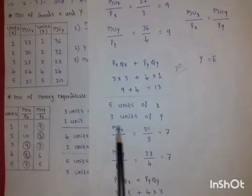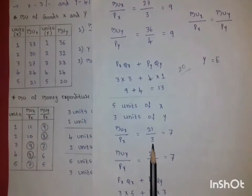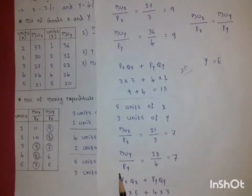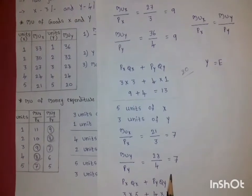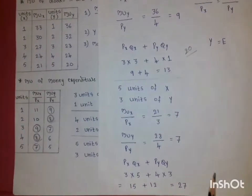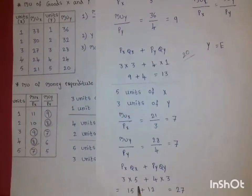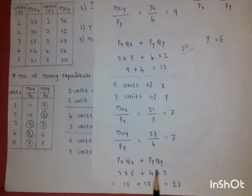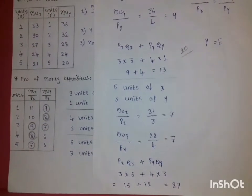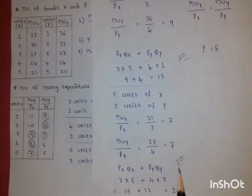For the combination of 5 units of X and 3 units of Y: MUx = 21, so 21/3 = 7; MUy = 28, so 28/4 = 7. The first condition is satisfied. But for the second condition: 3 × 5 + 4 × 3 = 15 + 12 = 27. However, the consumer's income is 20 rupees, so income and expenditure are not equal — therefore this combination does not allow maximum satisfaction.